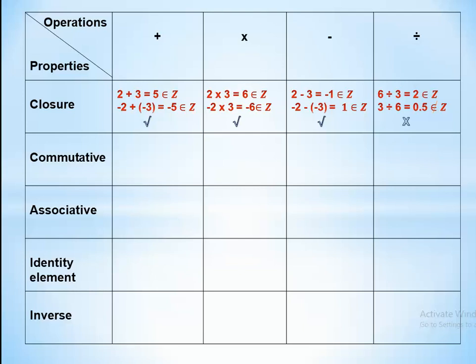Commutative means if we replace the position of numbers, the answer never changes. For example, 2 plus 3 is the same as 3 plus 2, and negative 2 plus negative 3 is the same as negative 3 plus negative 2 — so commutative exists in addition. For multiplication: 2 by 3 equals 6 and 3 by 2 equals 6, so commutative exists in multiplication.